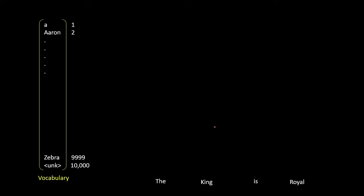To use words in our model, we have to convert these words into numbers. One technique that we can use is a vocabulary of words. Let's say we have a vocabulary of size 10,000 words. Every word will be converted into a number, and that number will be the position at which that word appears. Let's say the word 'the' appears at position 8,9 and the word 'king' appears at position 3,4,5,6.